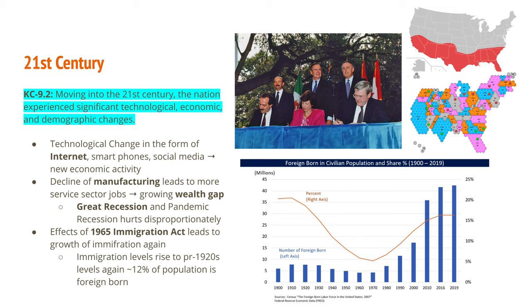The Great Recession of 2008, resulting from the subprime mortgage crisis, and the recession caused by the coronavirus pandemic hurt lower economic groups disproportionately. The already wealthy were less affected than those working service sector jobs, who earned much less money. People living close to the poverty line found that one missed paycheck or layoff was far more detrimental to their financial stability.